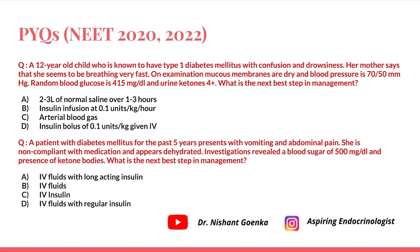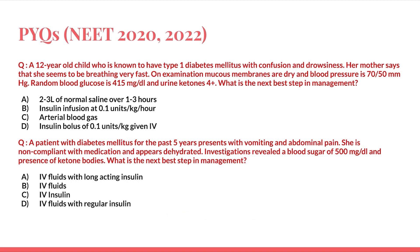The first question: a 12-year-old child known to have type 1 diabetes mellitus presents with confusion and drowsiness. Her mother says she seems to be breathing very fast. On examination, mucous membranes are dry, blood pressure is low at 70/50 mmHg, random blood glucose is 415 mg/dL, and urine ketones are 4+. What is the next best step in management?